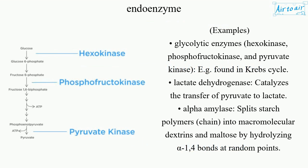Examples: glycolytic enzymes — hexokinase, phosphofructokinase, and pyruvate kinase — found in the Krebs cycle. Lactate dehydrogenase catalyzes the transfer of pyruvate to lactate.